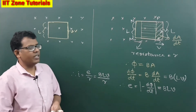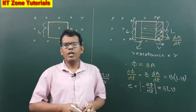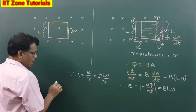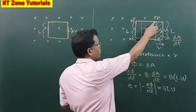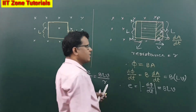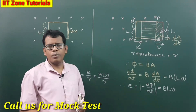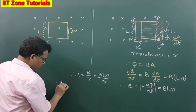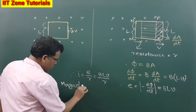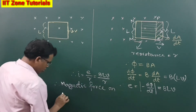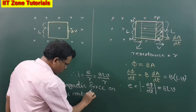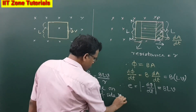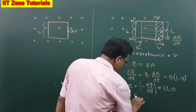Now the question arises: how will this induced current run through the square loop — clockwise or anticlockwise? The portion of the conductor which remains in the magnetic field region at the instant when the induced current is produced will experience a magnetic force. So the magnetic force on the conductor of side MN can be written as BIL.